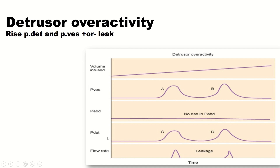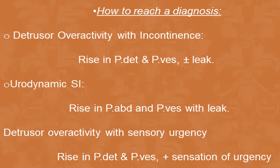How do we reach the diagnosis? When we have detrusor overactivity with incontinence, there is a rise in detrusor pressure and vesical pressure plus or minus leak. In the case of urodynamic stress incontinence, there is a rise in abdominal pressure and vesical pressure with a leak. When we have detrusor overactivity with sensory urgency, there is a rise in detrusor pressure and vesical pressure plus or minus sensation of urgency.